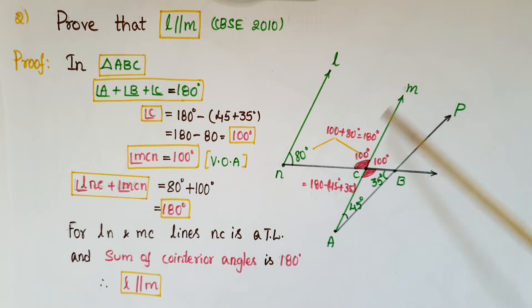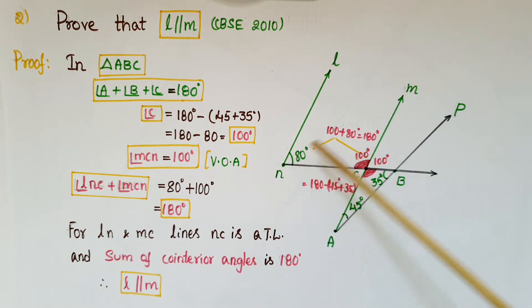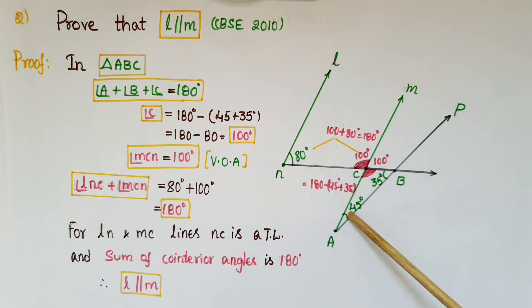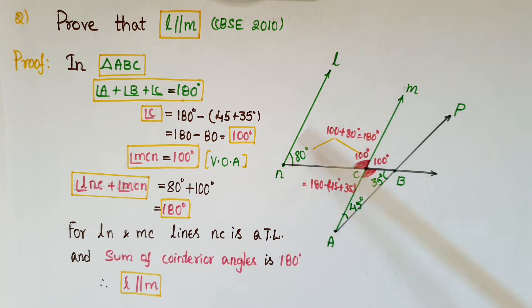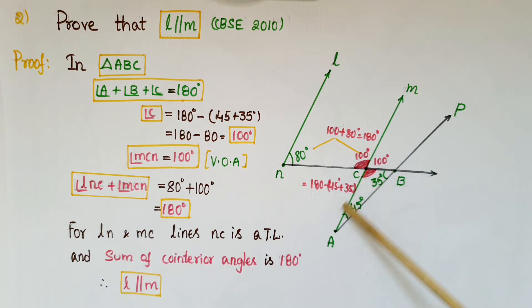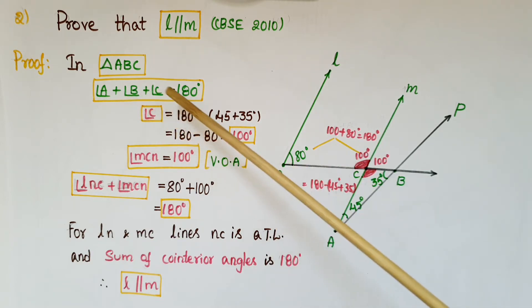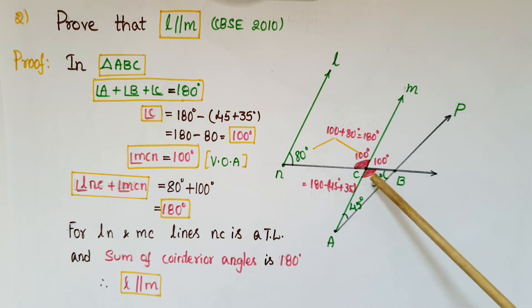For this problem, the angles given are 80 degrees, 35 degrees, and 45 degrees. We have to prove that l is parallel to m. If you observe, there is a triangle here, and two angles are known. Using the triangle angle sum property: angle A + angle B + angle C = 180 degrees, so angle C = 180 minus the sum of the two known angles.